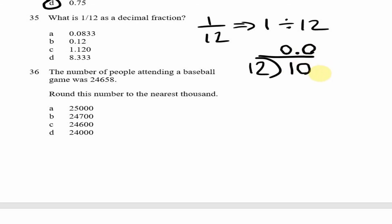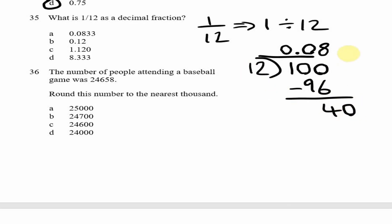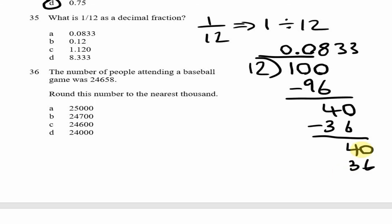Adding another zero, 12 into 100 goes 8 times; 8 × 12 = 96, remainder 4. 12 into 40 goes 3 times; 3 × 12 = 36, remainder 4. 12 into 40 goes 3 times again — this pattern repeats and will never end. Stopping at four decimal places, our answer is 0.0833, which is option A.